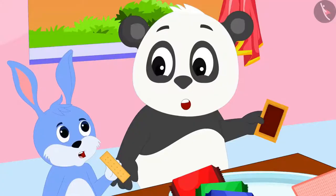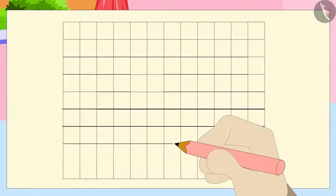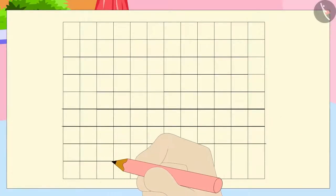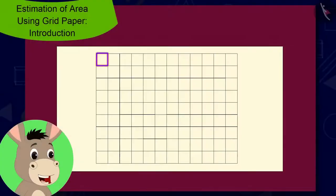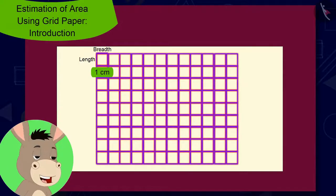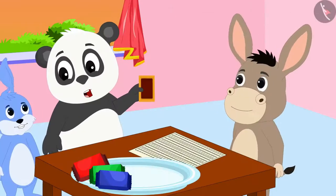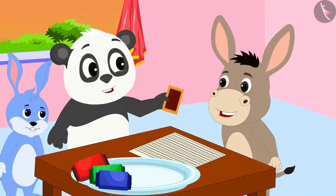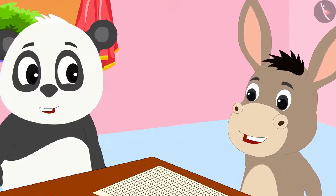Bunni and Golu could not understand anything. Then Bhoola made equal sized squares on a paper. A paper made of equal sized squares like these is called a grid paper, said Bhoola. But Bhoola, how can we use this to find out the biggest biscuit? Golu asked Bhoola.